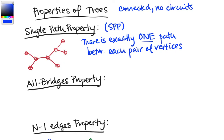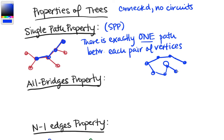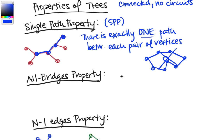In a tree, if we take any random pair of vertices, there's only one way to get between them. If there were more than one way — say, one path going up this way and another going a different route — together they would form a circuit, and we don't have circuits in trees. So there's always only one path between any pair of vertices.